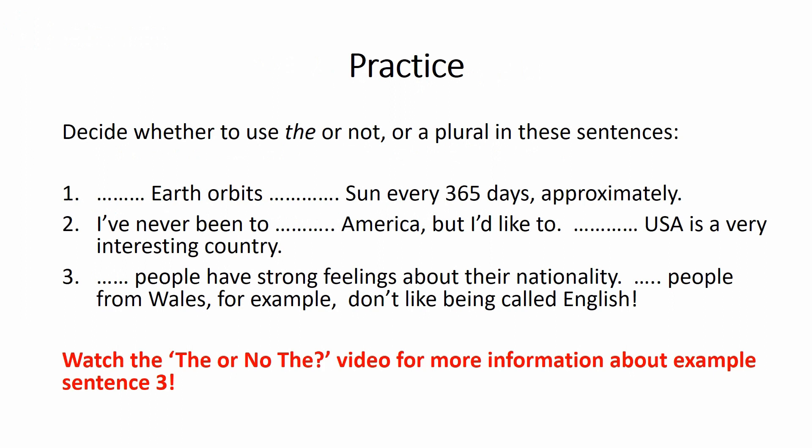Here comes the answer to number one: 'The Earth orbits the Sun every 365 days approximately.' So the Earth and the Sun — they're unique objects in our galaxy, at least — so you need to use 'the' with them.